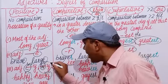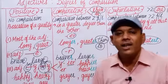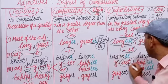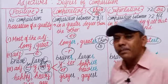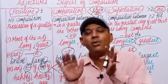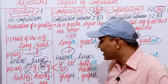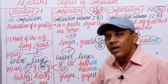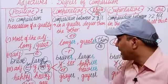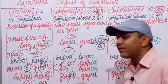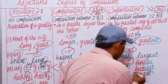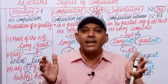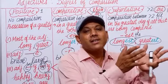If an adjective ends in 'y' and 'y' is preceded by a vowel, we do not remove 'y' — we simply add 'er' for comparative and 'est' for superlative. For example, the color 'gray' — 'a' is a vowel before 'y' — becomes 'grayer' and 'grayest.' If comparing three similar shades of gray, we use gray, grayer, grayest.